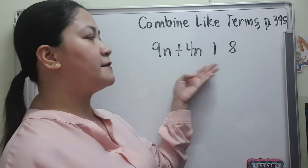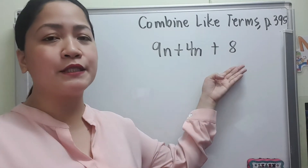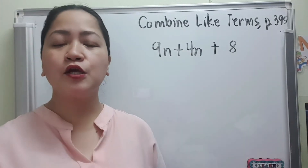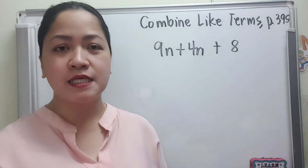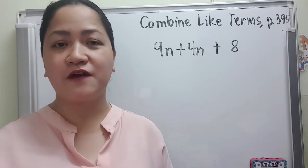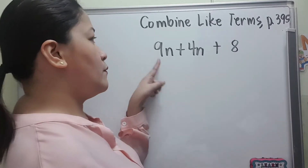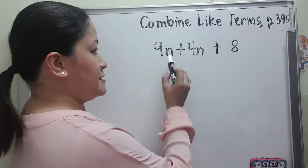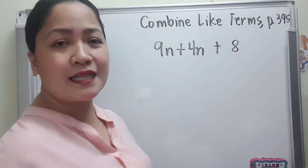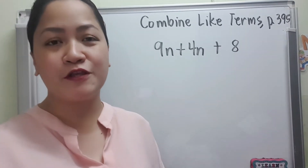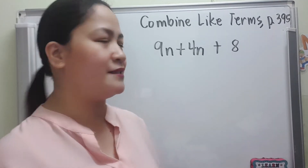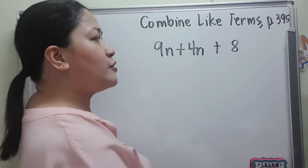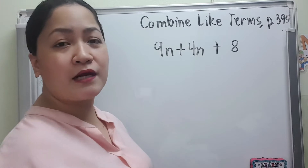We have 9n plus 4n plus 8. We have here 3 terms: 9n, 4n, and 8. So we are going to combine like terms. Like terms are terms with the same variables with the same exponents. So we know that 9n and 4n are like terms because they have the same variable n, and the same exponent — if we don't see the exponent, that means it is 1.